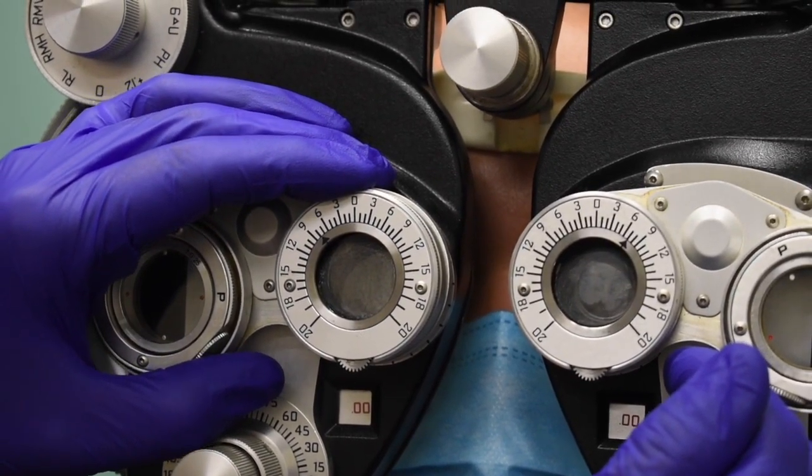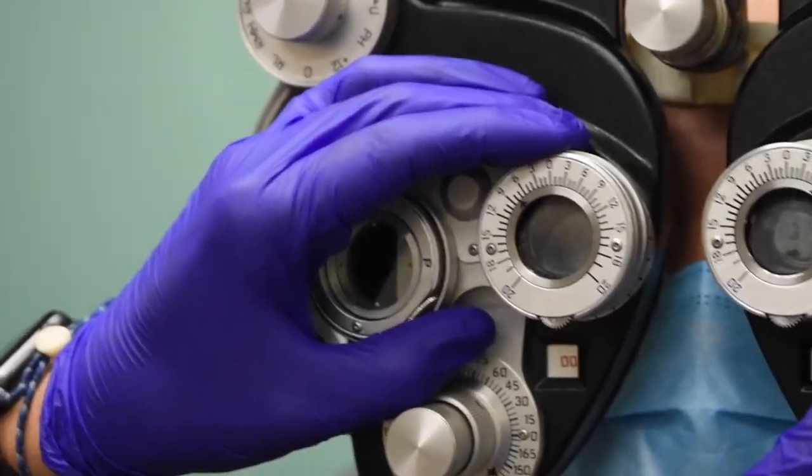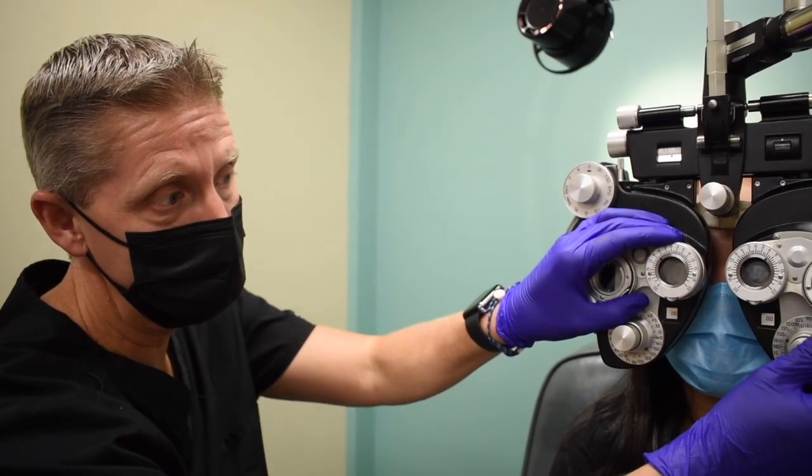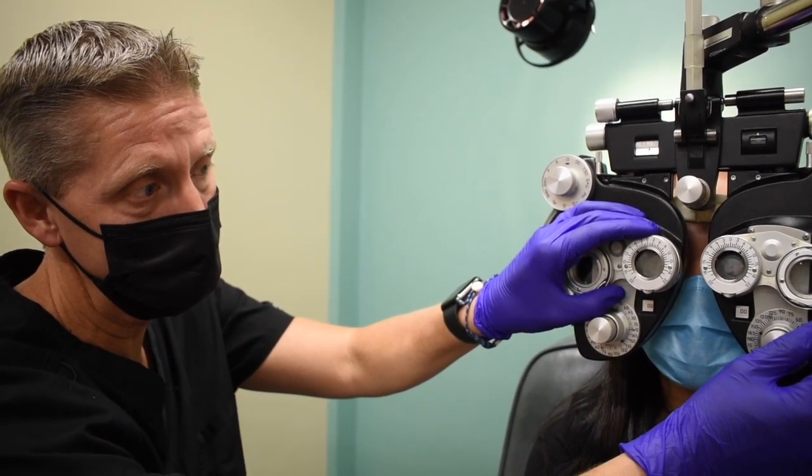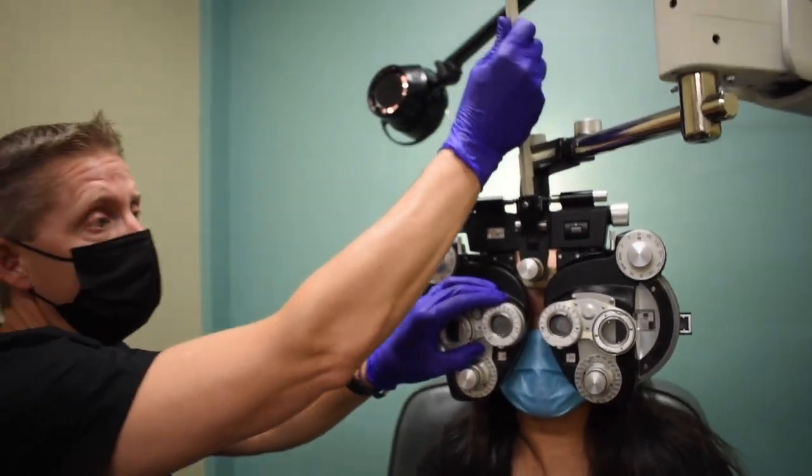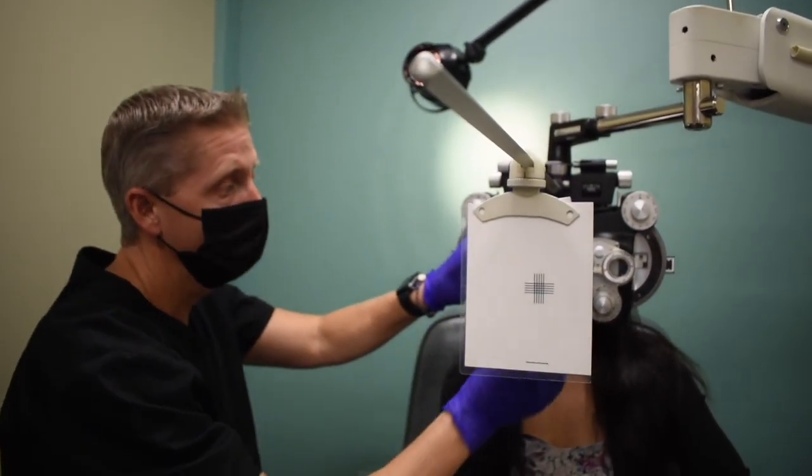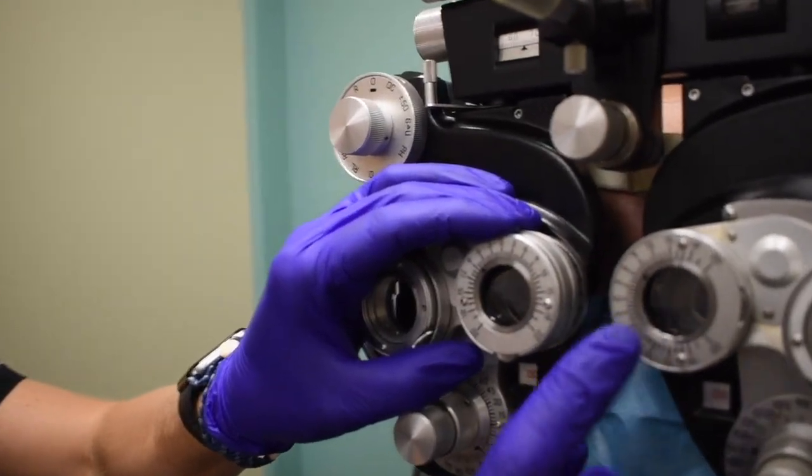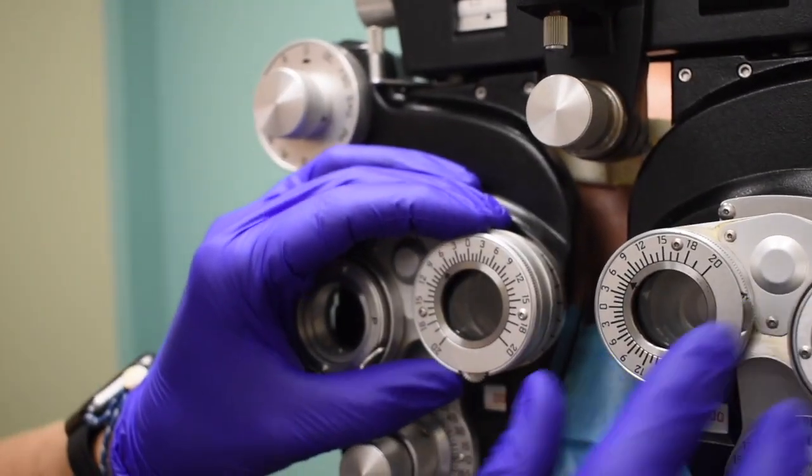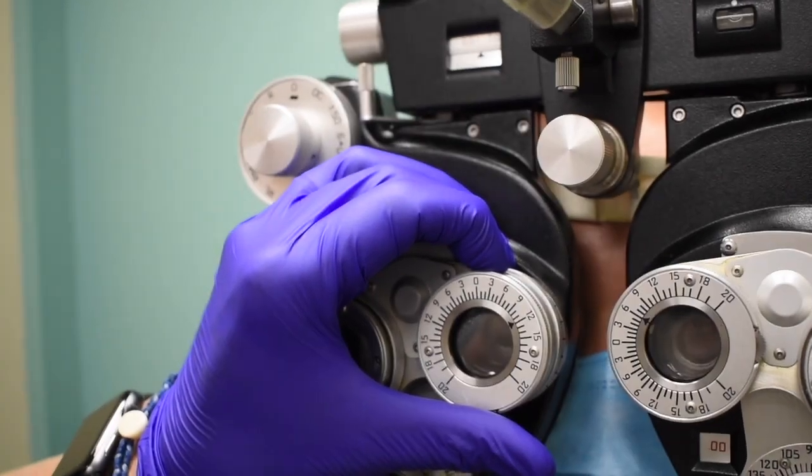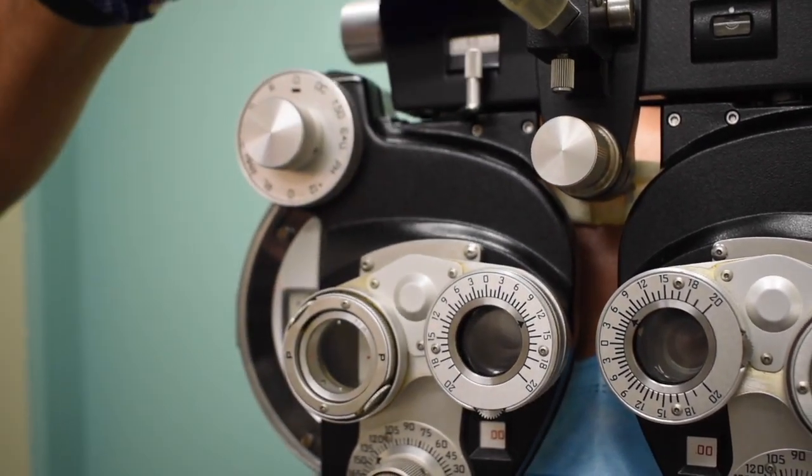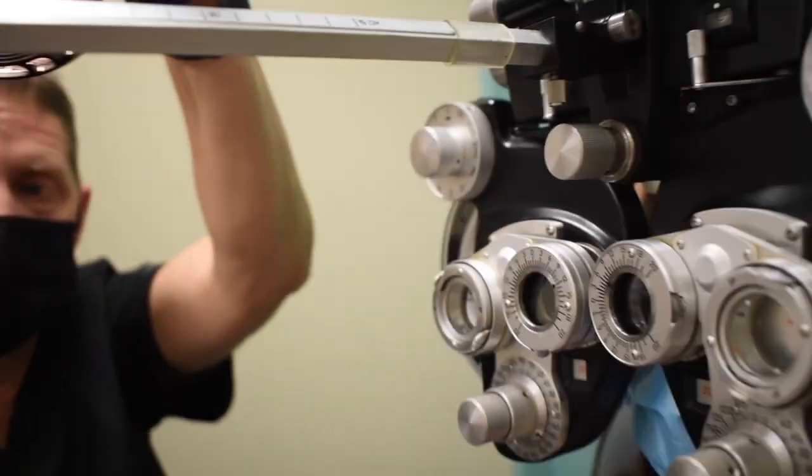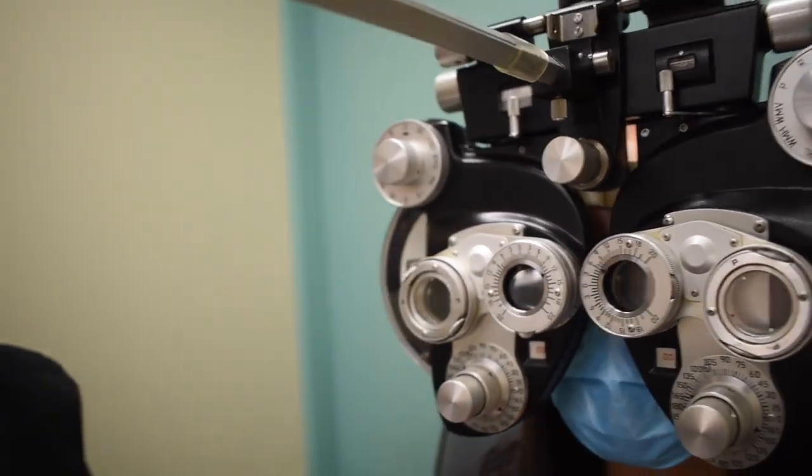So now we've done our horizontal and vertical phorias. We've done our vertical and horizontal vergences. Now we'll roll into our near point testing. I'll have you close your eyes again, Phoebe. To do that, we're going to drop our reading rod down. We're going to do our phorias and vergences at near first. I'm going to rotate my lenses and get them set up. So I've got 6 base up OS. I've got 12 base in OD. I'm going to rotate my PD in. I'm going to bring my overhead light on. And I'm going to have Phoebe go ahead and open her eyes.